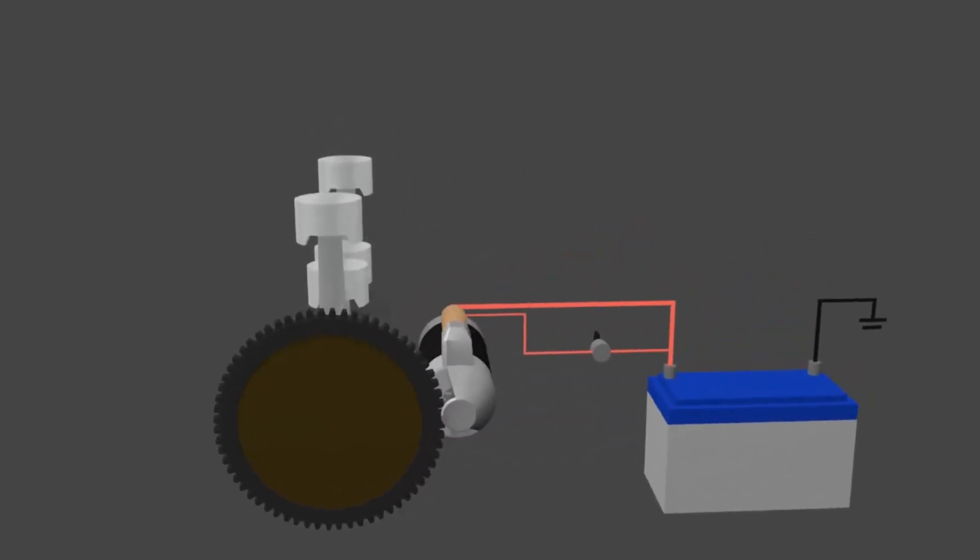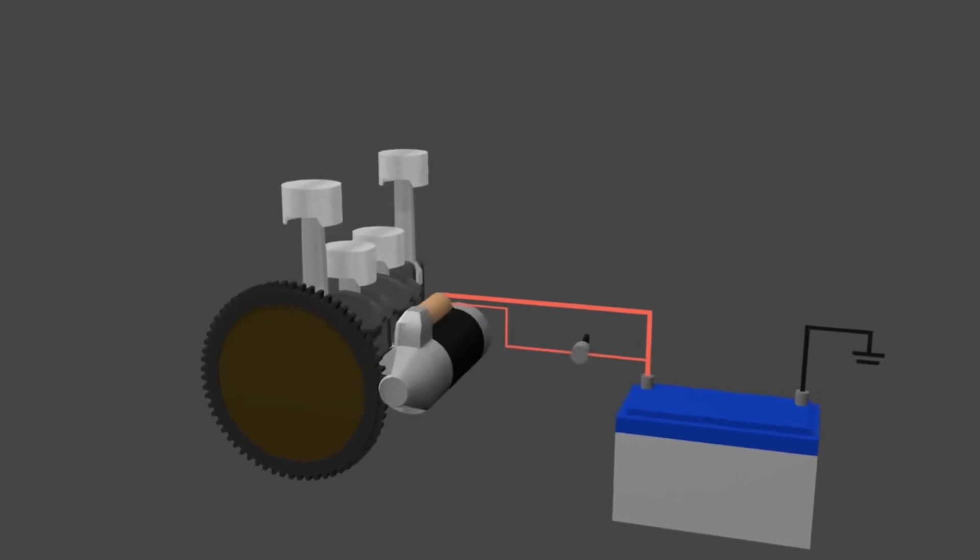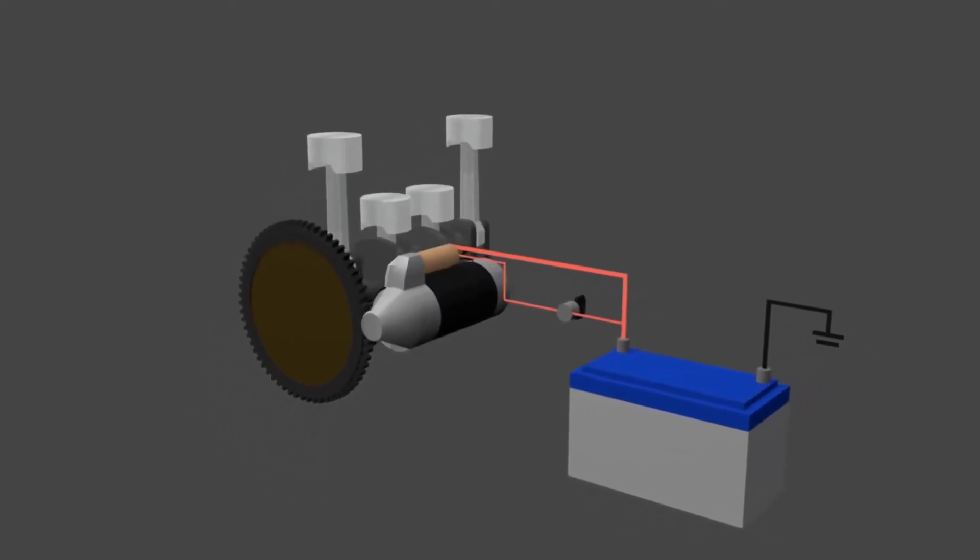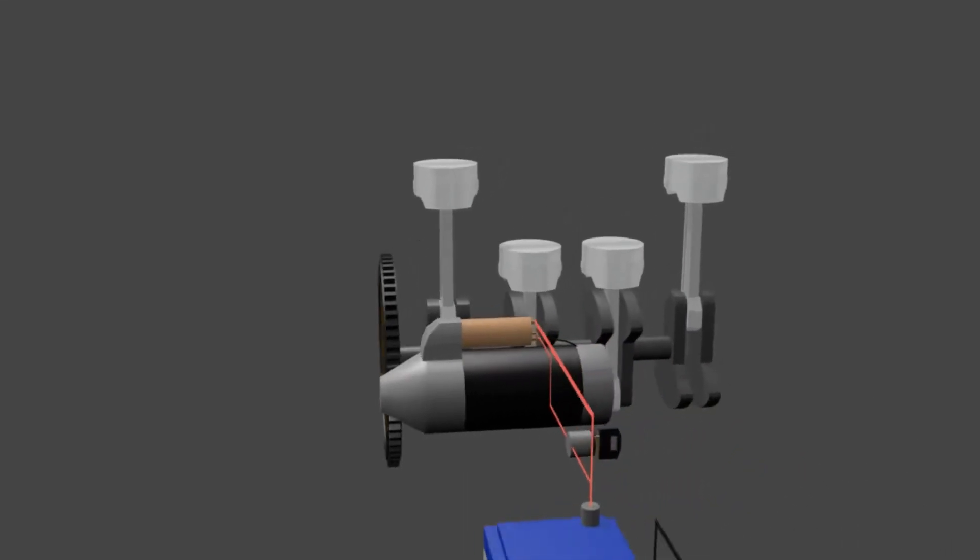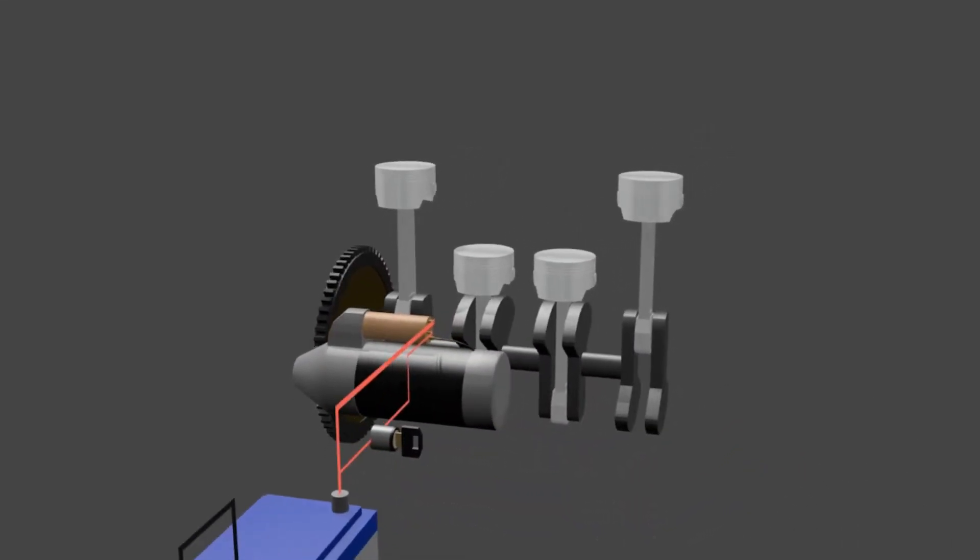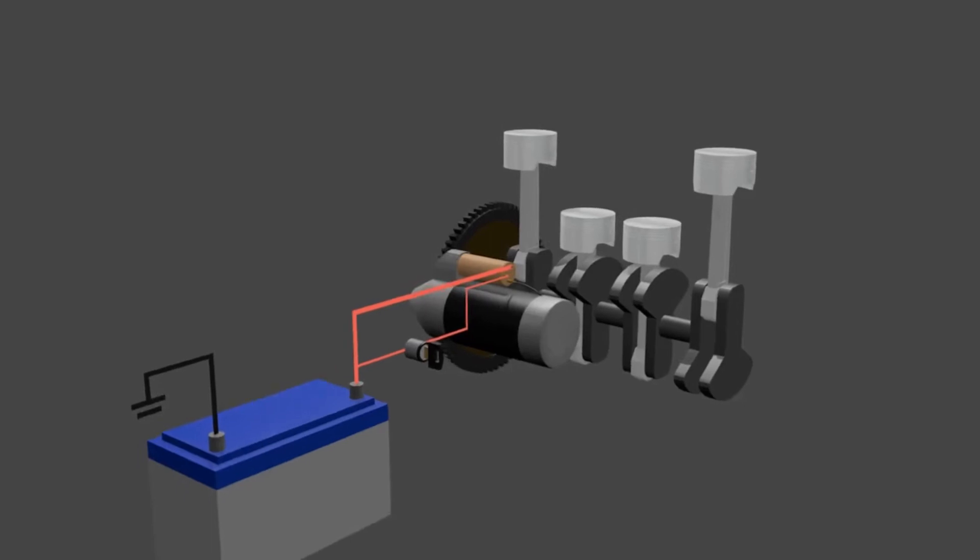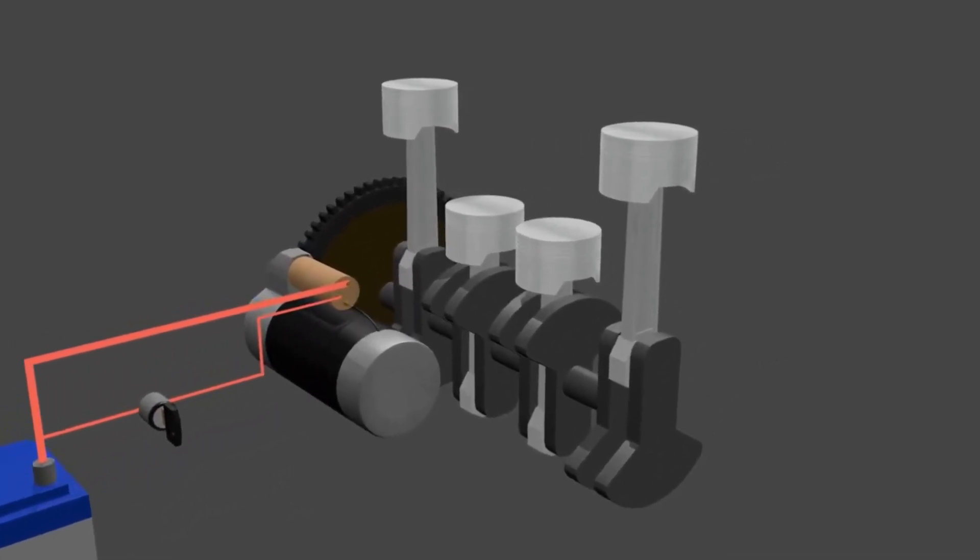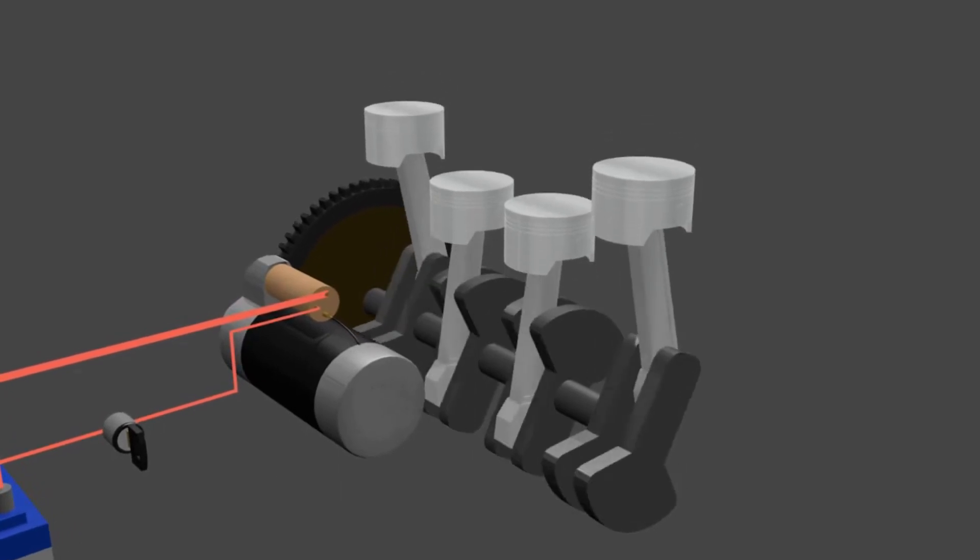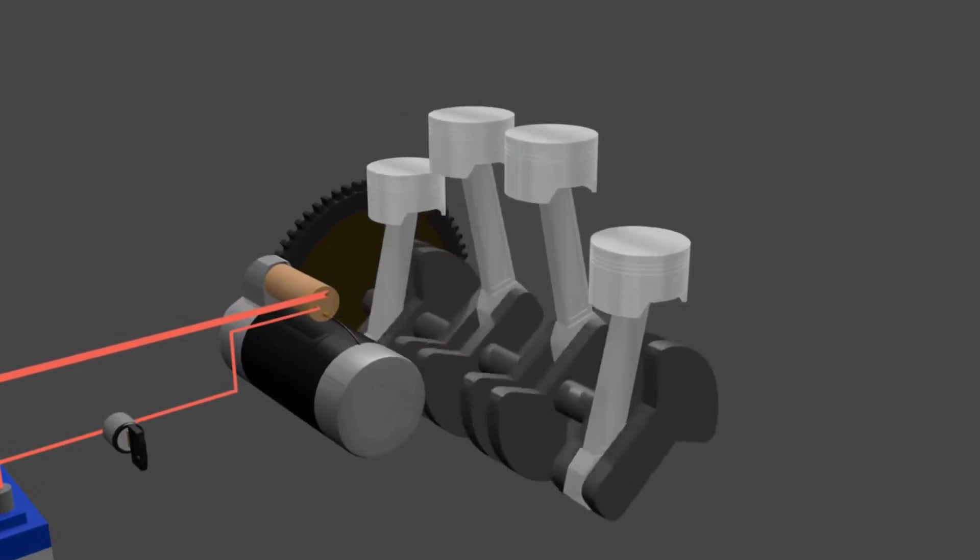The electronic starting system is an engine trigger mechanism that uses an electric motor as the driving force. In simple terms, this system uses the electrical energy stored in the battery to power the starter motor. The starter motor is connected to the flywheel, so that the starter motor can rotate the crankshaft.